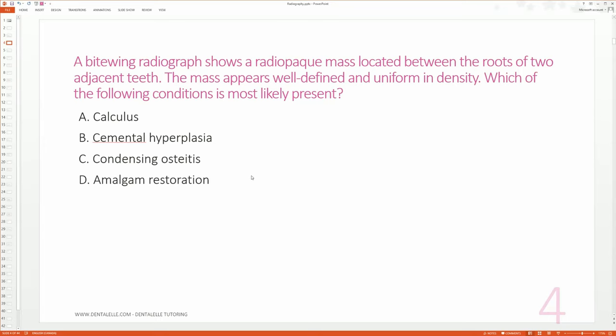Let's go through the question together. It's a bitewing, it's not a periapical this time. There's a radiopaque area, so that's a white area, but it's not just an area, it's a mass between two teeth. The mass isn't all over the place but it's very well defined. So these are very common things to know. Just off the top of my head: would calculus be seen in a bitewing? It could be. Would it be radiopaque? Think about these things.